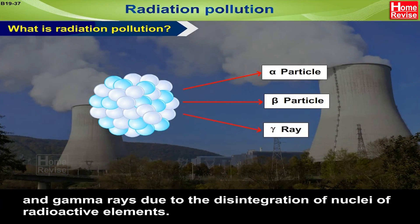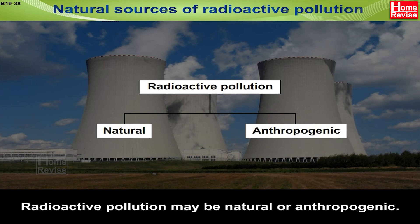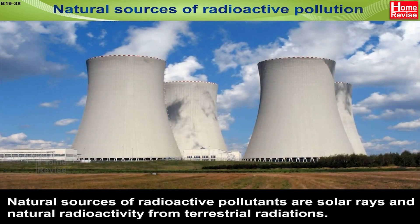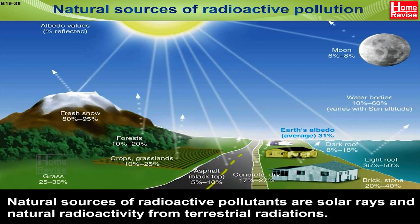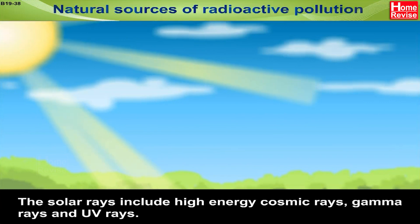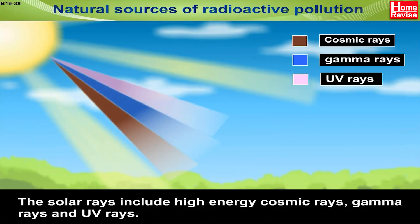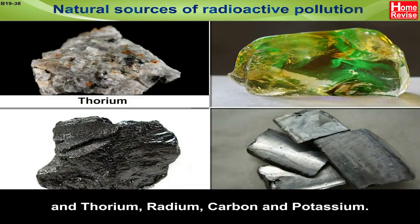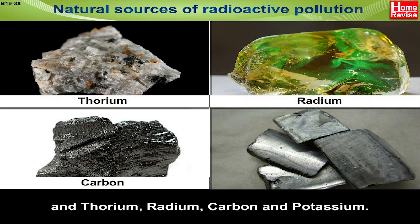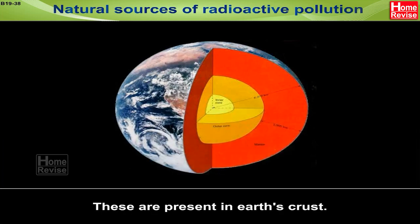Gamma rays are emitted due to the disintegration of nuclei of radioactive elements. Natural sources of radioactive pollution may be natural or anthropogenic. Natural sources include solar rays and natural radioactivity from terrestrial radiations. Solar rays include high-energy cosmic rays, gamma rays, and UV rays. Background radiations are generated from radioactive elements like uranium, thorium, radium, carbon, and potassium, present in Earth's crust.